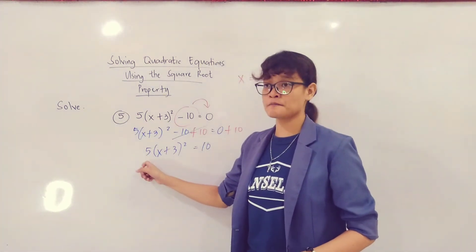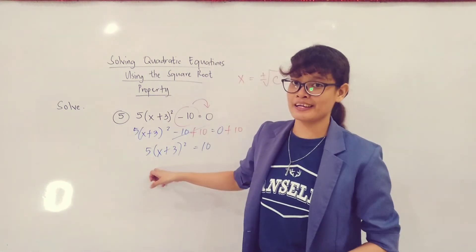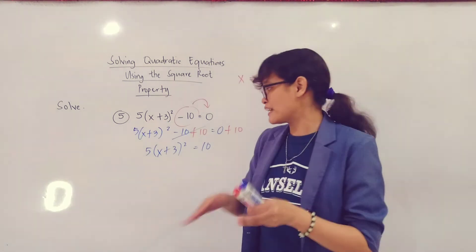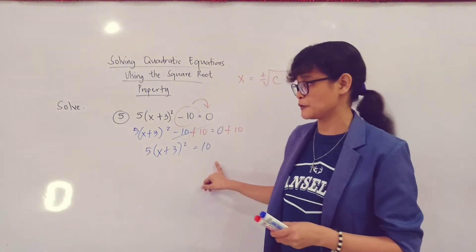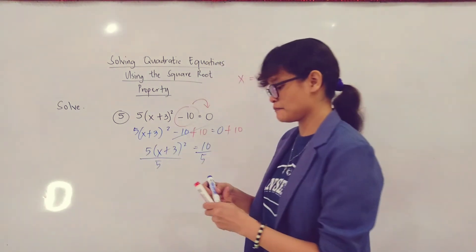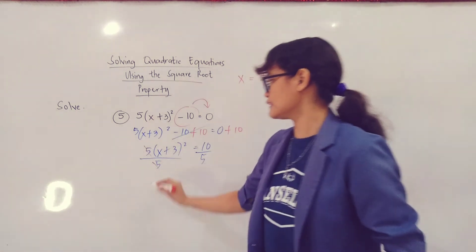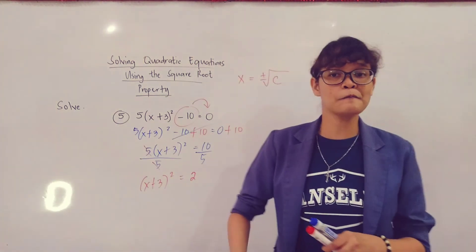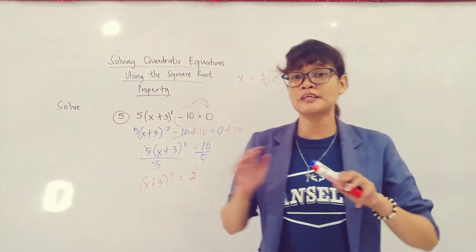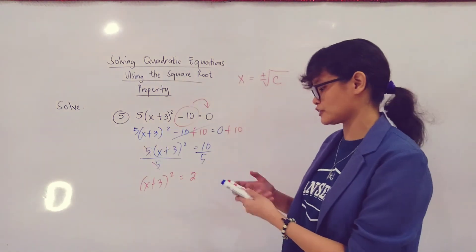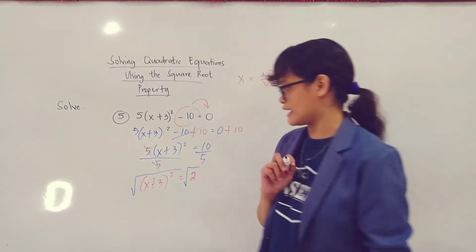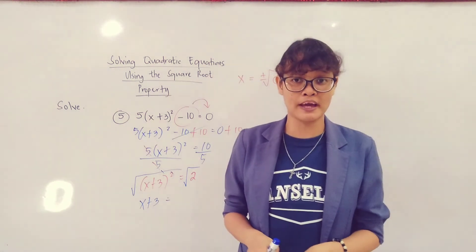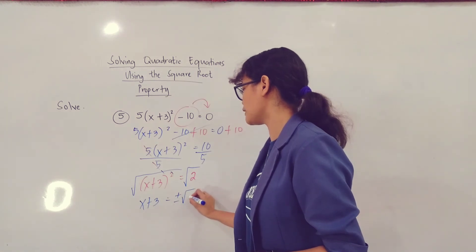However, meron pa tayong coefficient na 5 dito sa labas ng parenthesis mo. So kailangan, kung ano man yung number na yan sa labas ng parenthesis mo, yun yung gagamitin mong pang-divide dito at saka sa number dito sa right side ng equation mo. So divide both sides by 5. In that way, this will now be equal to 1. Kaya ang matitira na lang dyan ay x plus 3 squared equal to 2. And now the last step is to simply extract the square root of both terms of the equation. So you'll have the square root of x plus 3 squared, cancel this one out. So you'll have x plus 3. And this is equal to, since 2 is not a perfect square, this is just equal to positive negative square root of 2.